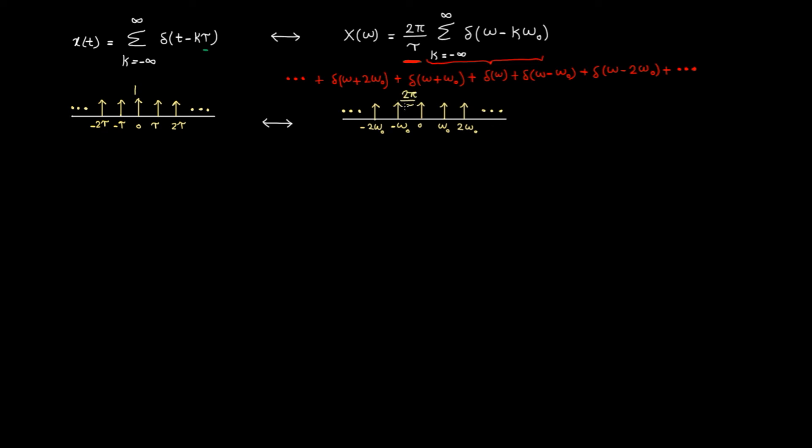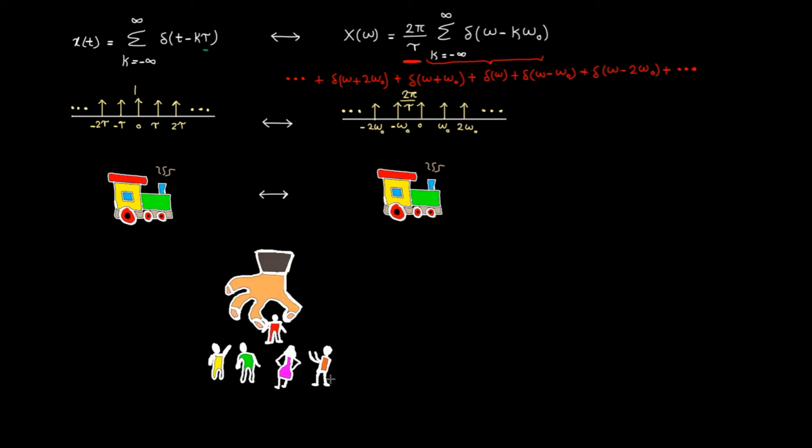Again, to recap the example, this simply means the Fourier transform of an impulse train in the time domain is an impulse train. I will use this example in the next lecture on sampling.